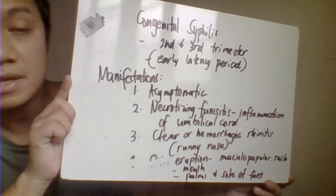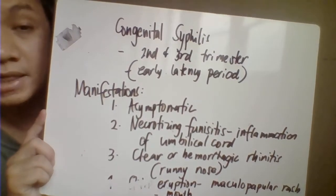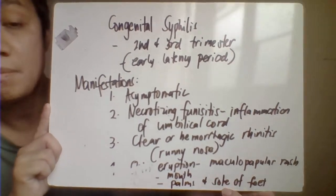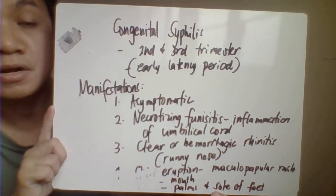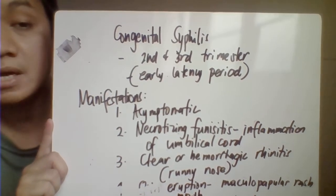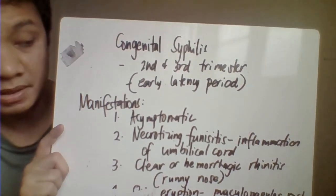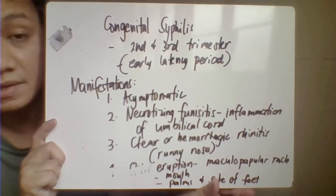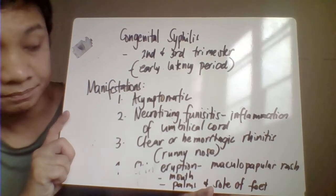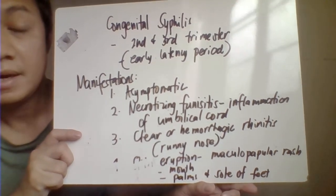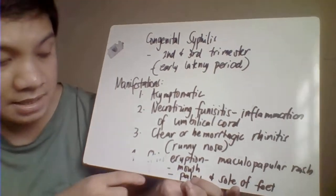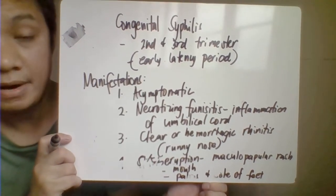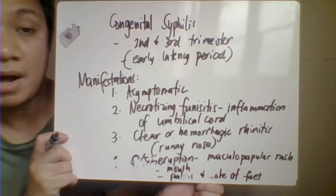Congenital syphilis occurs when the mother is infected during pregnancy and transmits the infection to the baby. It occurs mainly in the second and third trimester. Manifestations include necrotizing funisitis — the most important manifestation, characterized by inflammation of the umbilical cord — clear or hemorrhagic rhinitis (runny nose), and skin eruptions characterized by maculopapular rash affecting the mouth area or the palms and soles of the feet.